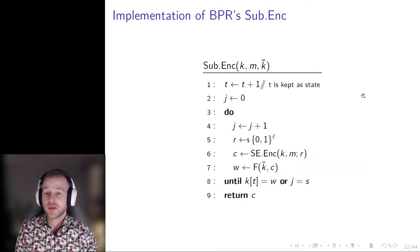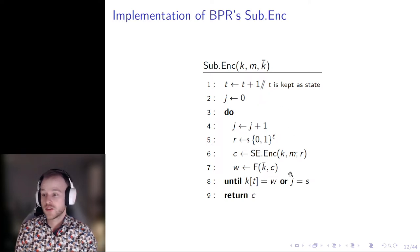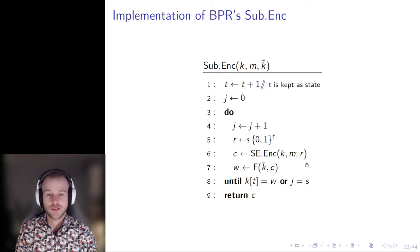Here is an implementation of BPR's ASA idea. Note that the index T for the key K is kept as state and incremented on each encryption. The value S is a fixed parameter limiting the number of ciphertext samples drawn during a single invocation in the main loop. The subverted encryption algorithm resamples C using fresh coins until the result of applying PRF F on C equals the current bit of key K.